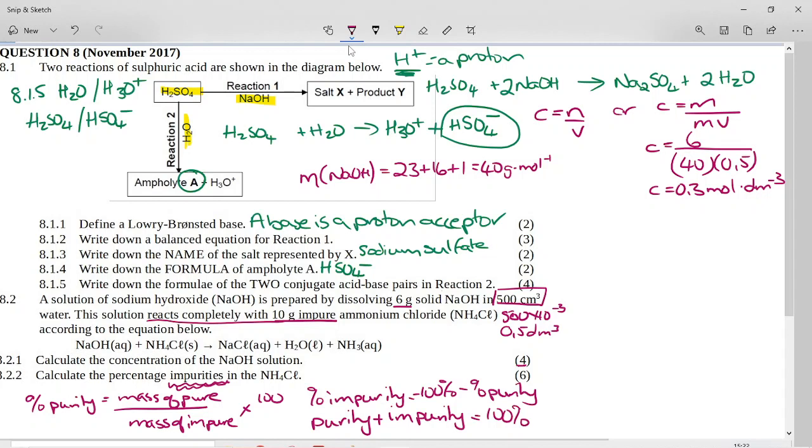So the only thing we can find the moles for, because you must always find the moles before you start, is the 6 grams of sodium hydroxide. So what we want to do is we want to say how many moles of sodium hydroxide did we have to react with?